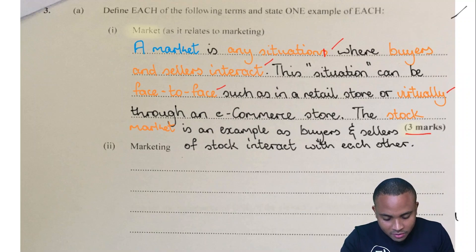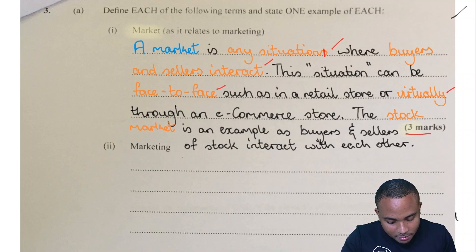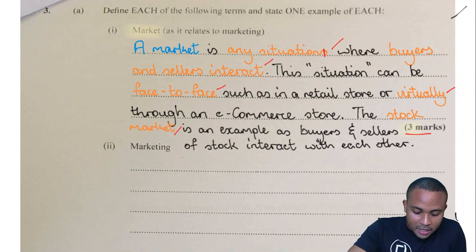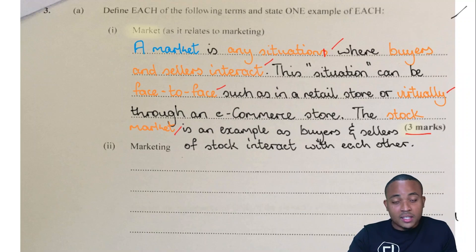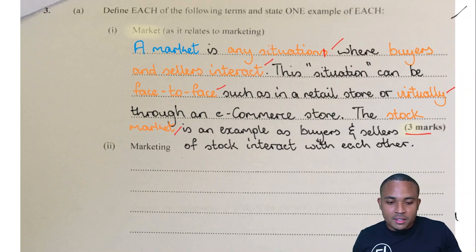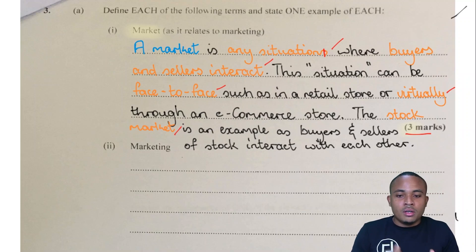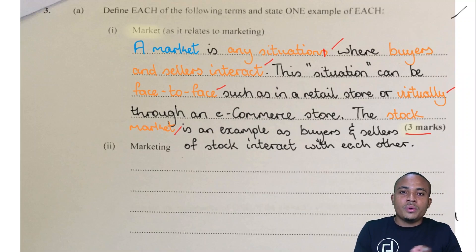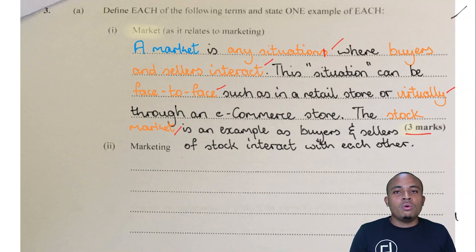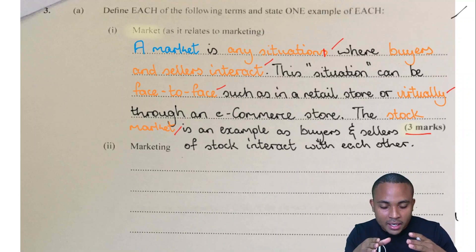Two marks for the definition, one mark for the example. The example we have is the stock market, as buyers and sellers of stock meet and interact through the stock market. So we got our three marks. Now let's go and get three marks for marketing.